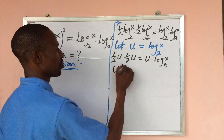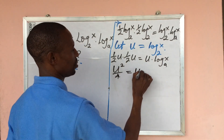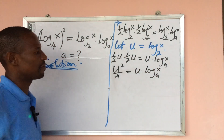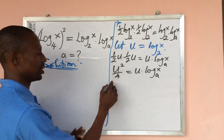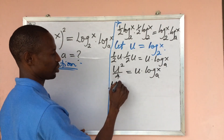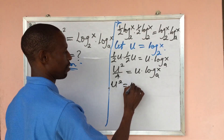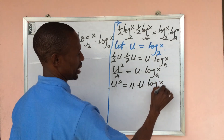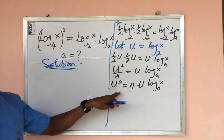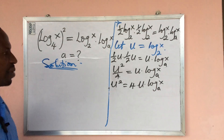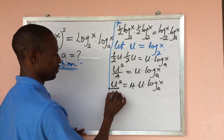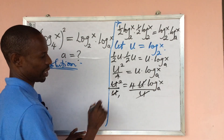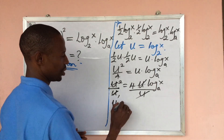Simplifying, we get u squared over 4 equals u times log x base e. Multiplying through by 4 gives: u squared equals 4 times u times log x base e. We then divide through by u, eliminating one u from each side.